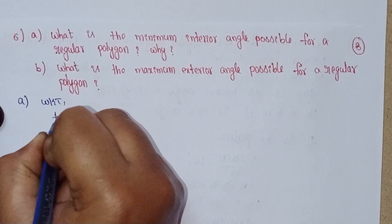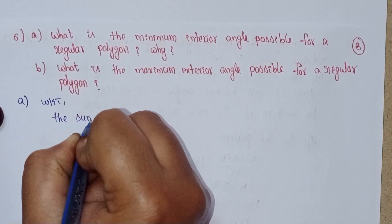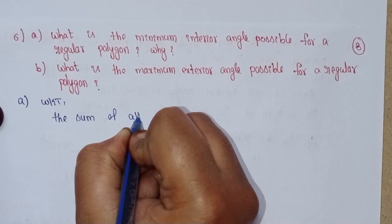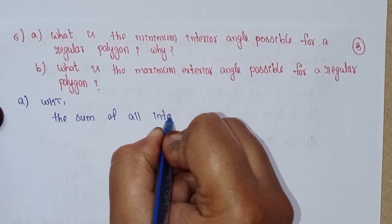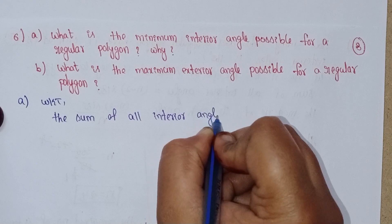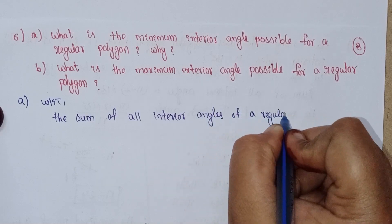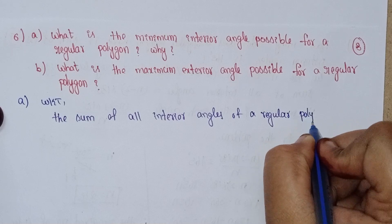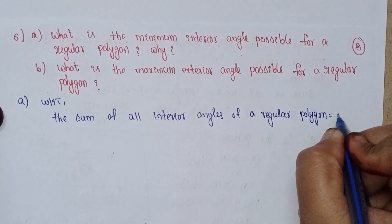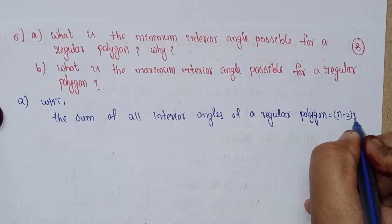The sum of all interior angles of a regular polygon is (n-2) into 180 degrees, where n is the number of sides.